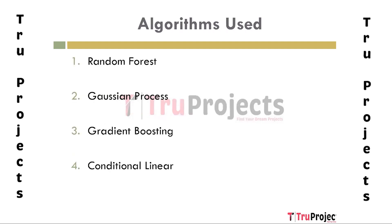The algorithms used in the project are as follows. Random forest is used in the steel plate thickness prediction due to its ability to handle complex relationships in the data and reduce overfitting by creating multiple decision trees and aggregating their predictions, improving accuracy and robustness. Gaussian process is utilized for its capability to model uncertainty and make probabilistic predictions.